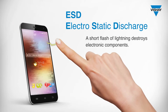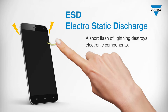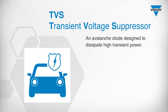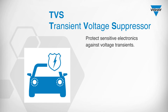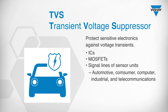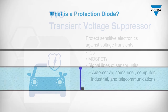Such an electrical discharge leads to the destruction of sensitive electronic components or to the malfunction of an electrical device such as a smartphone. What is TVS? A transient voltage suppressor (TVS) is an avalanche diode specially designed to dissipate high transient power surges and clamp overvoltages. TVS diodes can be used in sensitive electronics for protection against voltage transients induced by inductive load switching and lightning on ICs, MOSFETs, and signal lines of sensor units for automotive, consumer, computer, industrial, and telecommunication applications.